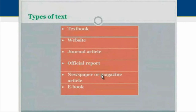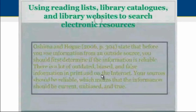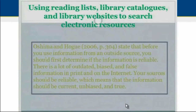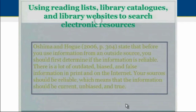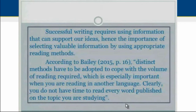To search for the material you need, the author suggests the use of reading lists, library catalogs, or library websites, because they can help us save time. However, we have to keep in mind that before using a source, we should first determine if the information is reliable, because there is a lot of information that is outdated, biased, and false. We have to make sure that the information we are using is current and true. Successful writing requires using information that can support our ideas; hence the importance of selecting valuable information by using appropriate reading methods. Bailey mentions that distinct methods have to be adapted to cope with the volume of reading required, which is especially important when reading in another language.